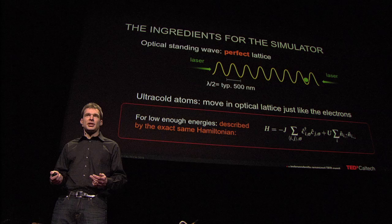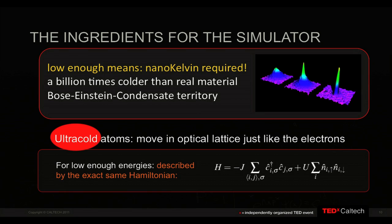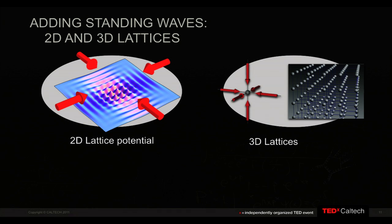There's a catch: 'low enough energies' requires very, very cold temperatures — we need ultra-cold atoms. The temperatures we're talking about are in the nano-Kelvin range, which is many billions of times colder than the superconductor itself, which was already quite cold. Nano-Kelvin is basically the range of the coldest objects ever known — the territory of Bose-Einstein condensates and degenerate quantum gases of atomic physics. By using two or three intersecting standing waves, we get a two- or three-dimensional geometry very similar to the crystal lattice we're interested in. This is going to be our simulator.